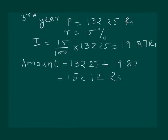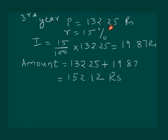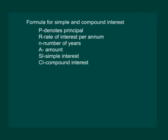We see that each year the interest is rising because the principal is changing. In simple interest, the principal remains the same — it would stay at 100 each year — so interest remains the same each year. But in compound interest, the principal changes, so the interest calculated keeps increasing.